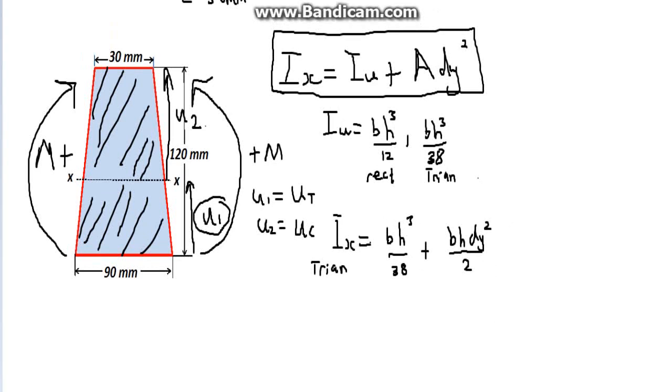Now, because there are two triangles, we say 2 times this whole thing. Lo and behold, if you do some quick math here, we can remove unwanted numbers. This is divided by 36, my bad. For a triangle, base times height cubed, divided by 36. Sorry about that.